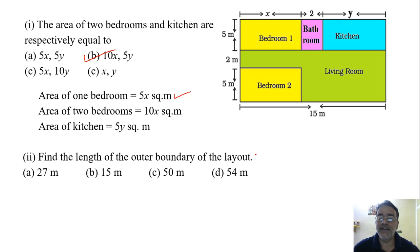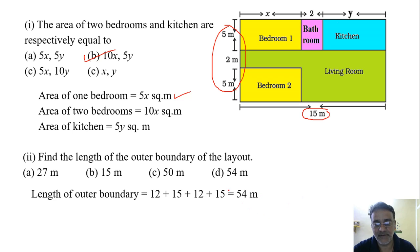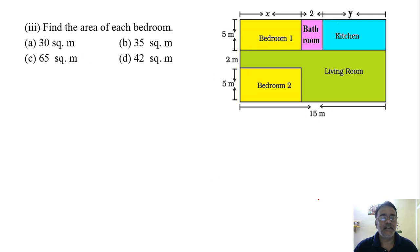Now we will move toward the next question. Find the length of the outer boundary of the layout. Outer boundary means the perimeter. So the length is given 15 meter and what is the breadth? 12 meter. So 15 plus 12 plus 15 plus 12, or 2 into (l plus b), formula you can use. So 15 plus 12 is 27, 27 into 2, that's 54. So the correct option is D. Any doubt in this question? No sir.